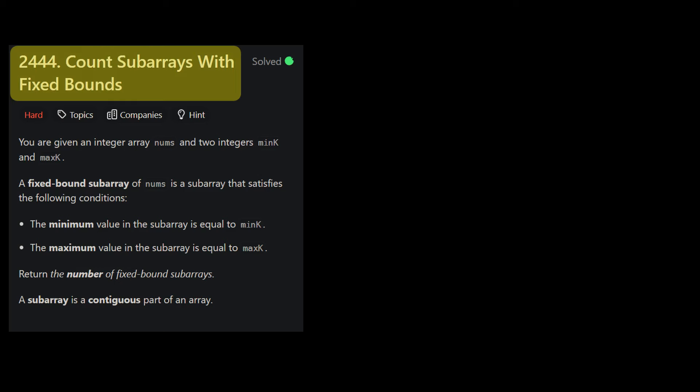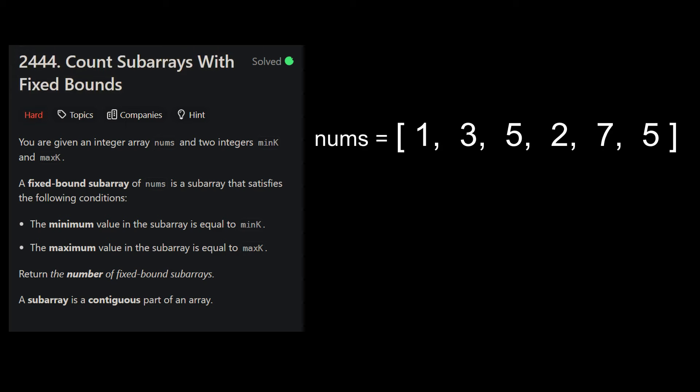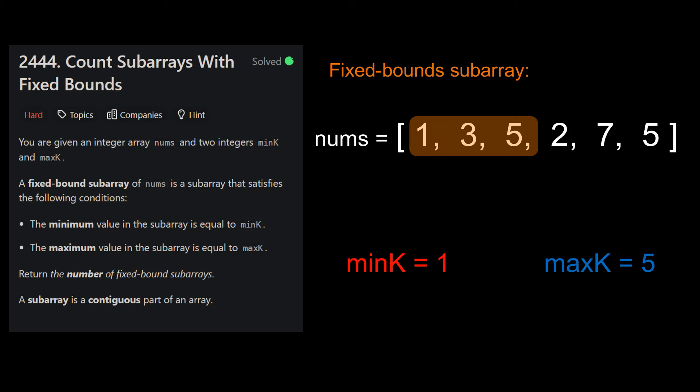Today's LeetCode problem is count subarrays with fixed bounds. This is a hard daily problem which uses ideas from dynamic programming to help us. You are given an integer array nums and two integers min k and max k. Next, we define a fixed bound subarray as a subarray whose minimum value is exactly min k and whose maximum value is exactly max k.